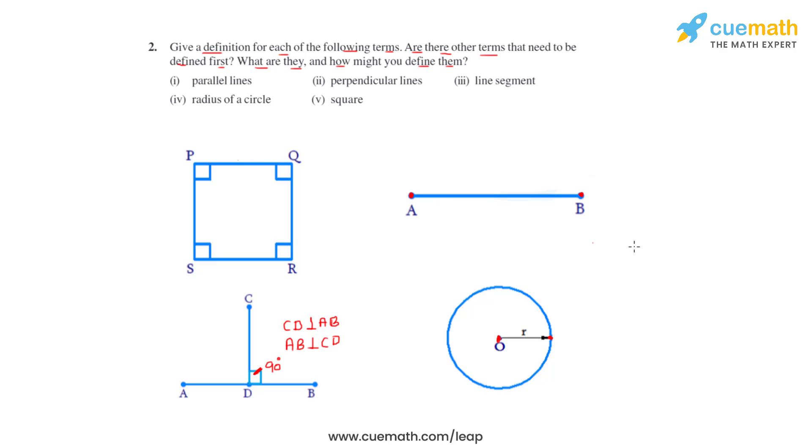So side PQ is equal to side QR is equal to side RS is equal to side SP. They all are of same length and all of these line segments have right angles between them.